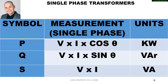Looking at this table, these are the formulas we're going to be using for single phase. The letter P represents true power and the units are kilowatts. The symbol Q represents reactive power and the units are volt-amps reactive. The symbol S represents apparent power and the units are volt-amps.